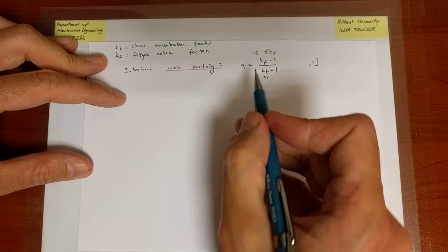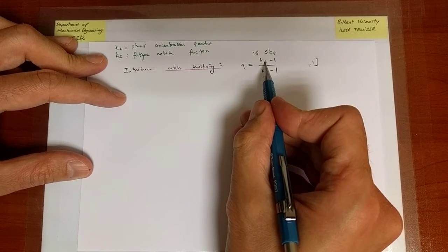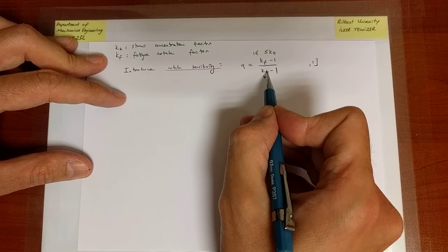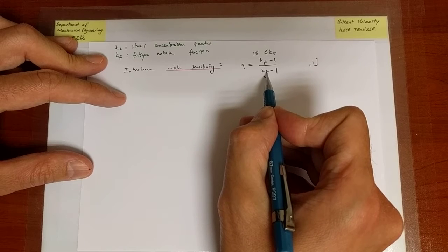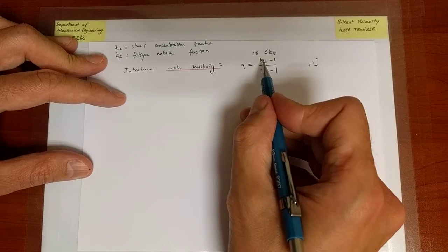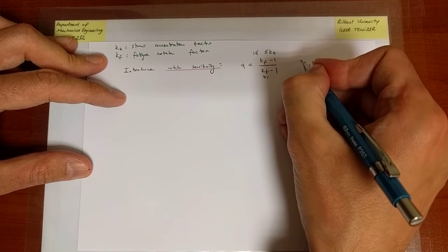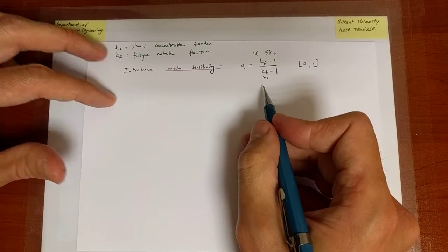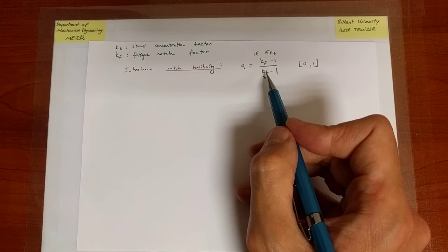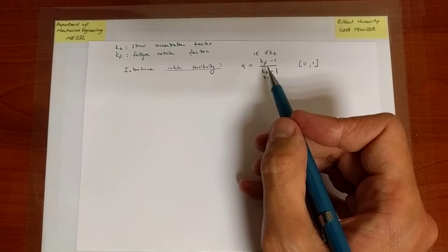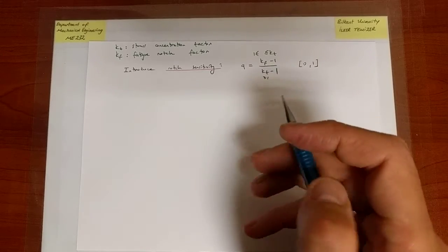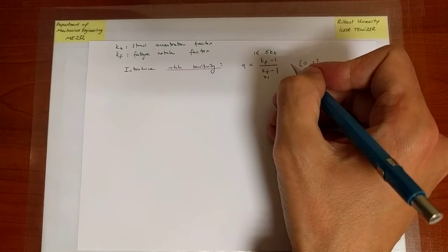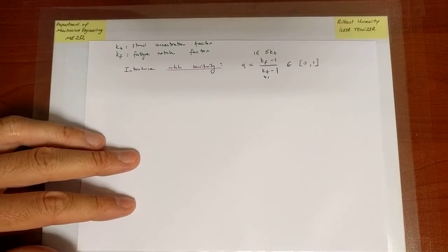That's the upper bound. And the lower bound is when KF is equal to 1, despite the fact that KT is not equal to 1. When KF is equal to 1, Q is equal to 0. So Q takes the relation between KF and KT that we want to talk about and maps it to a quantity that is lying between 0 to 1.